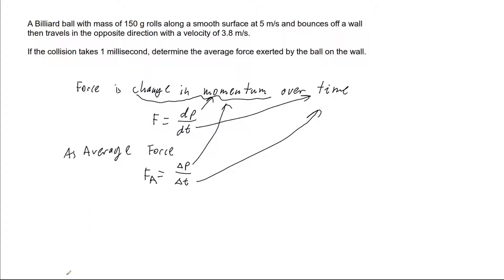So delta p is the change in momentum. I've already discussed that. So it's going to be the momentum before the collision minus the momentum after the collision. So we can write this as delta p equals the mass before the collision times the velocity before the collision, m1 v1, minus the mass and velocity after m2 v2.